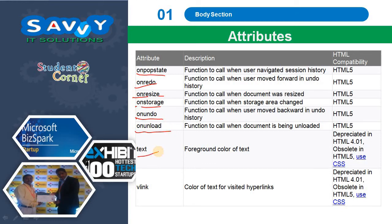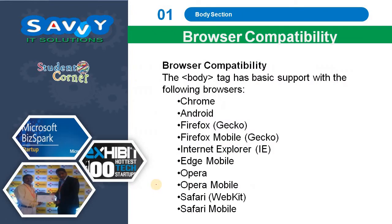Text — foreground color of text. Vlink — color of text for visited hyperlinks.